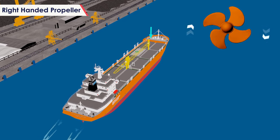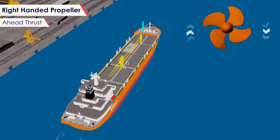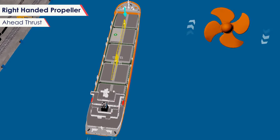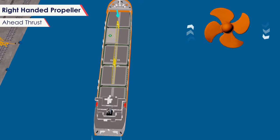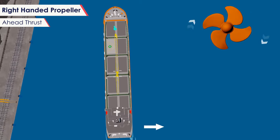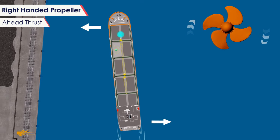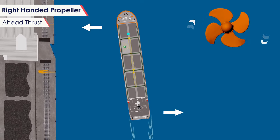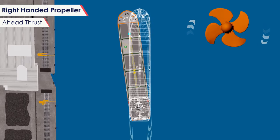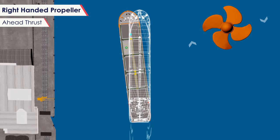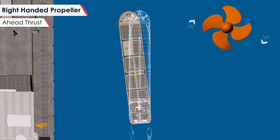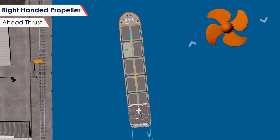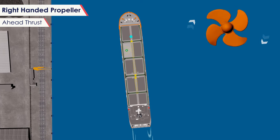On a ship with a right-handed propeller with thrust ahead, the propeller will be turning clockwise. As a result of the transverse thrust, the stern will walk to starboard and, with a twist around the pivot point, the bow will go to port. As a result, right-handed propeller ships on ahead motion will have a tendency to turn to port. This is a major reason for their port turning circles to be tighter than the starboard turning circles.